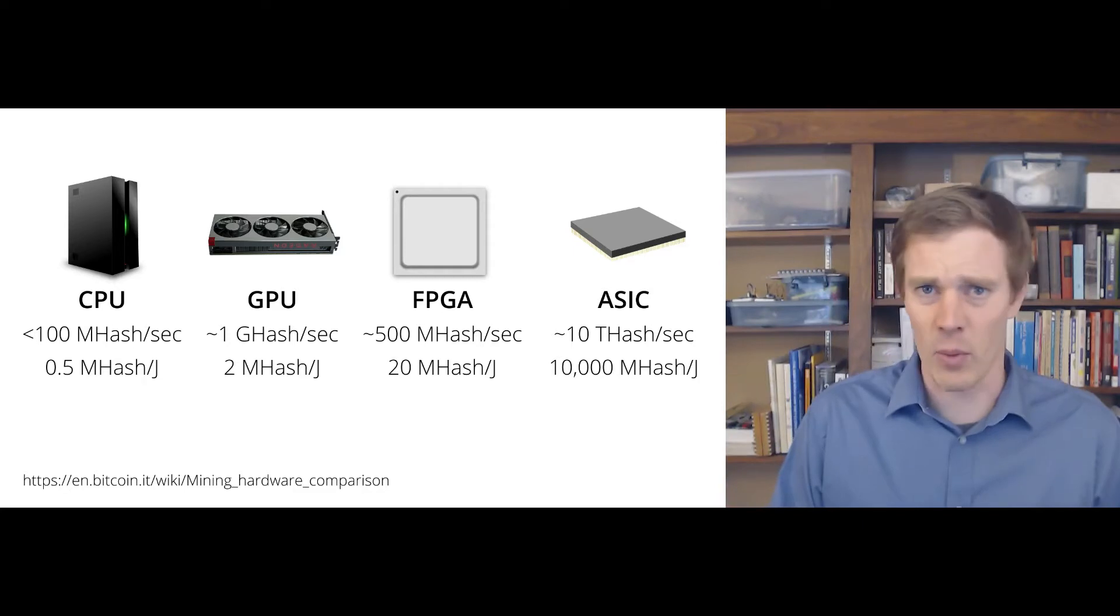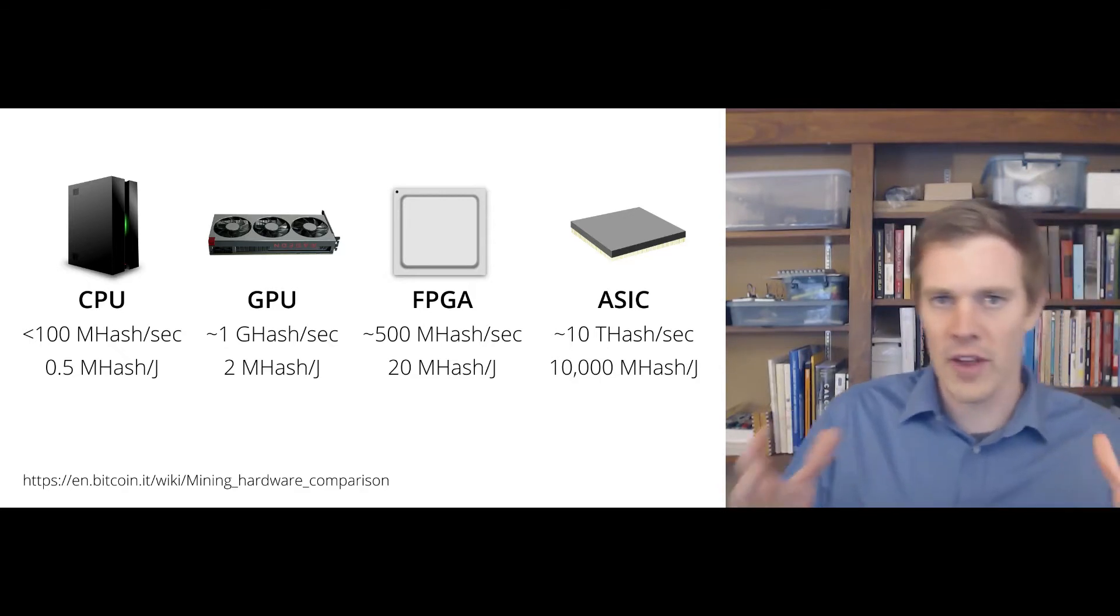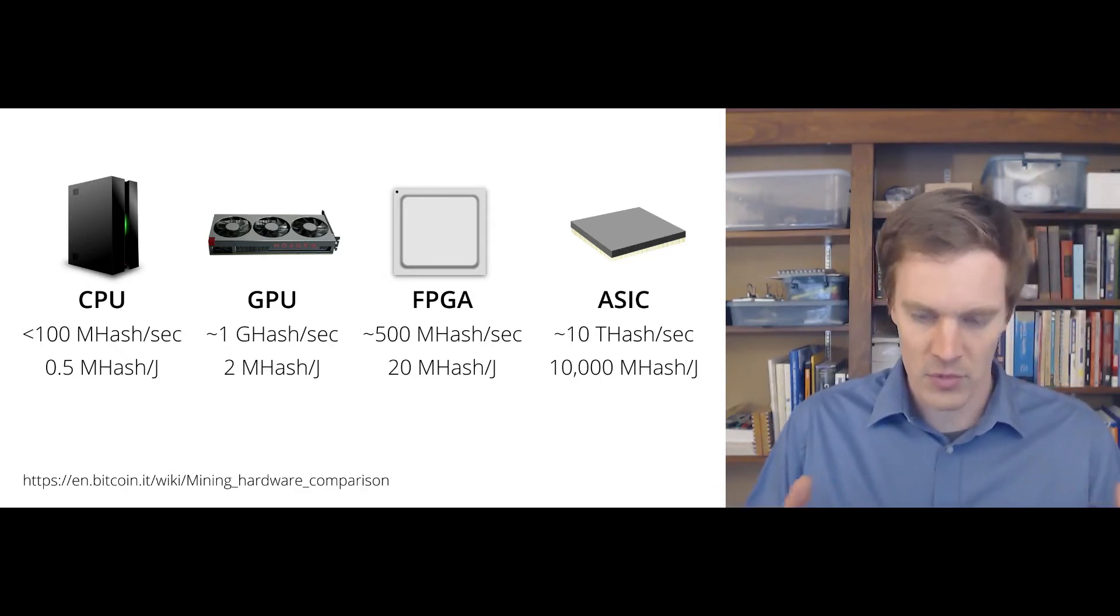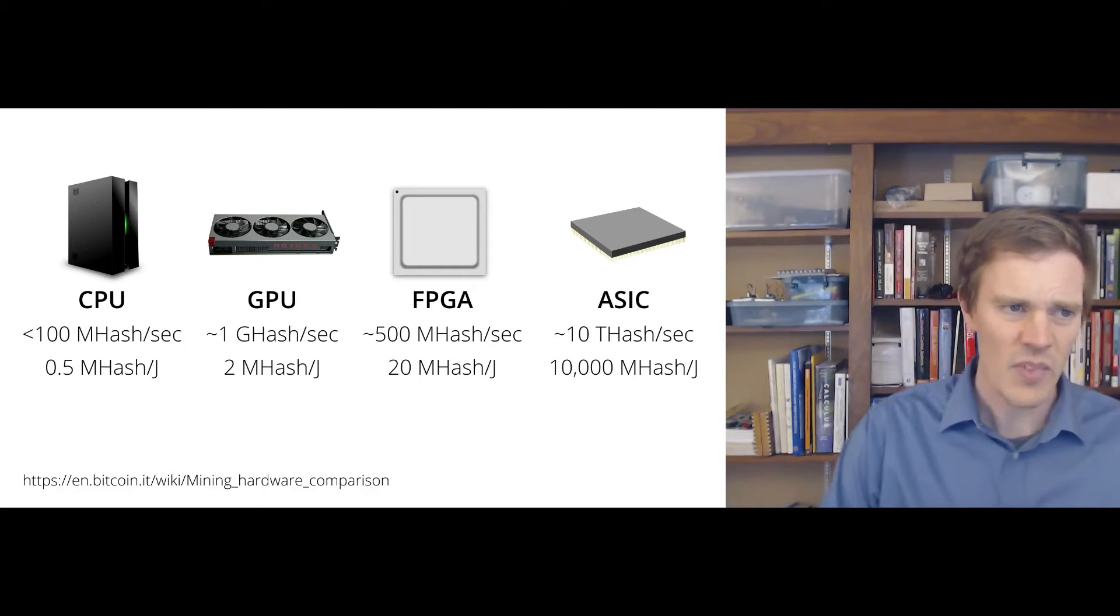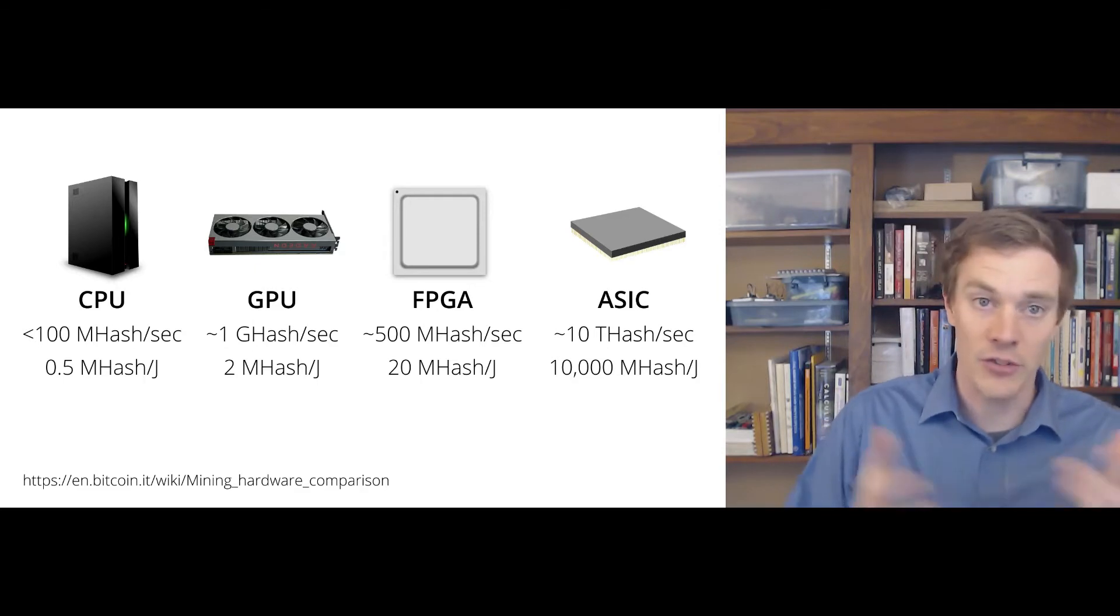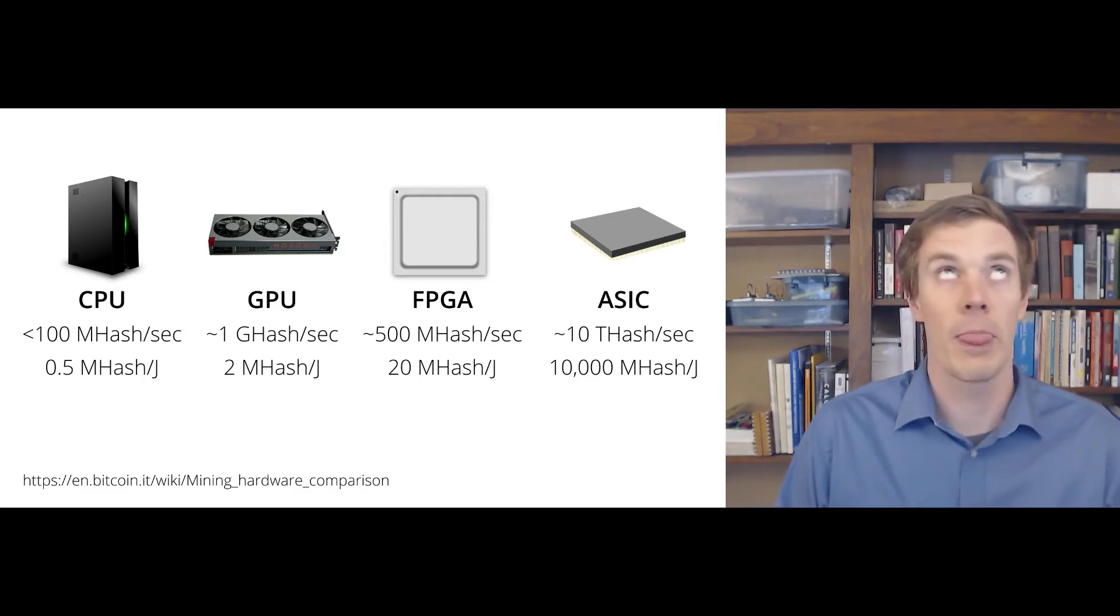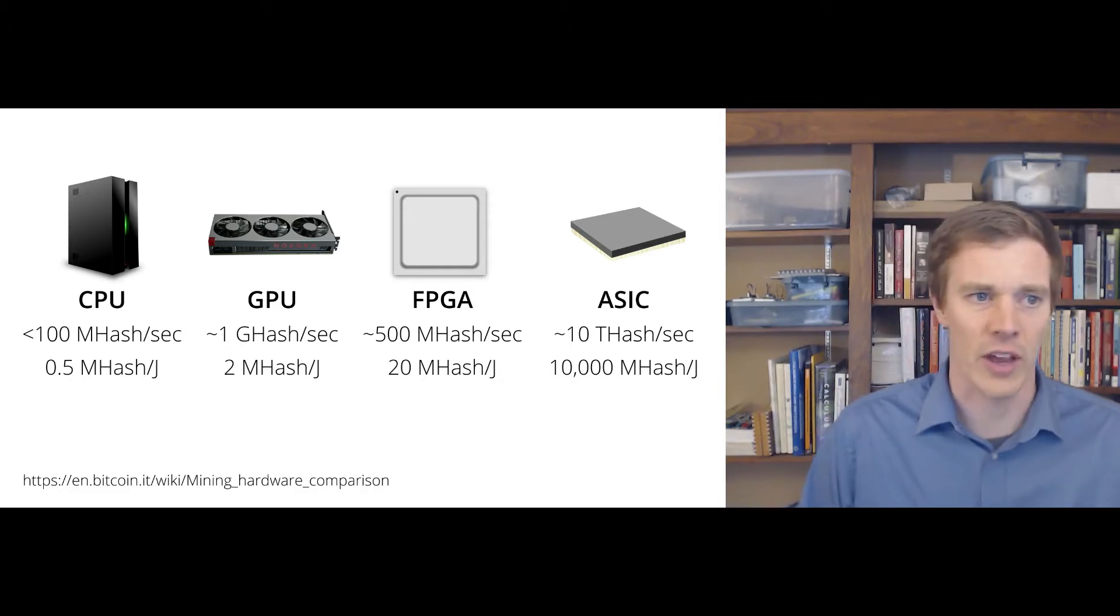And so clearly the amount of money you can make doing this is based on how efficient you are at converting electricity into Bitcoin. How much computation can you do for a given unit of electricity? And so when Bitcoin first started, people were mining Bitcoin on CPUs. We'll quantify this in how much computation you can do in hashes per second. So a hash is a particular operation on the blockchain. CPU, maybe a hundred million hashes per second. If you've got a GPU, you could do a gigahash per second, over a billion hashes per second.